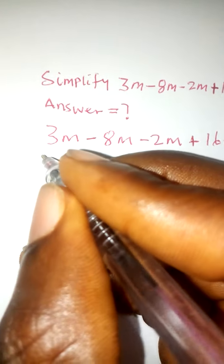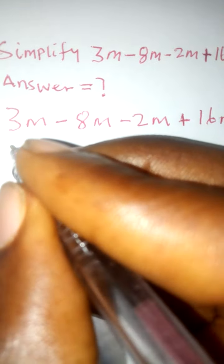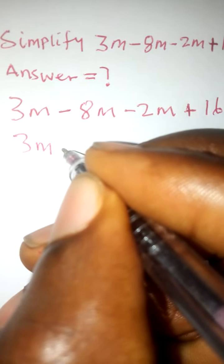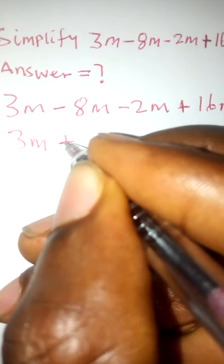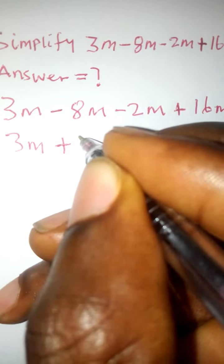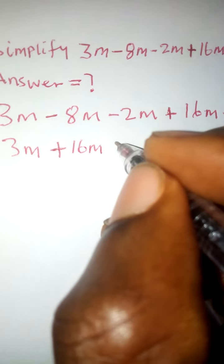So now the next step. The next step is to have my 3m. Then plus 16m. Then plus 16m.